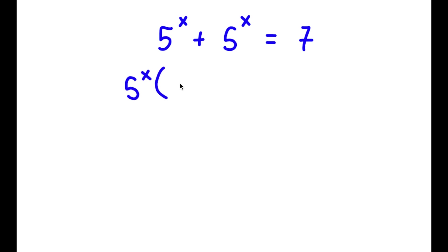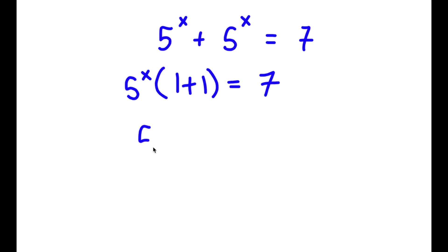So now I have 5 to the power of x times 1 plus 1 is equal to 7. Now 1 plus 1 is 2, so I have 5 to the power of x times 2 is equal to 7.